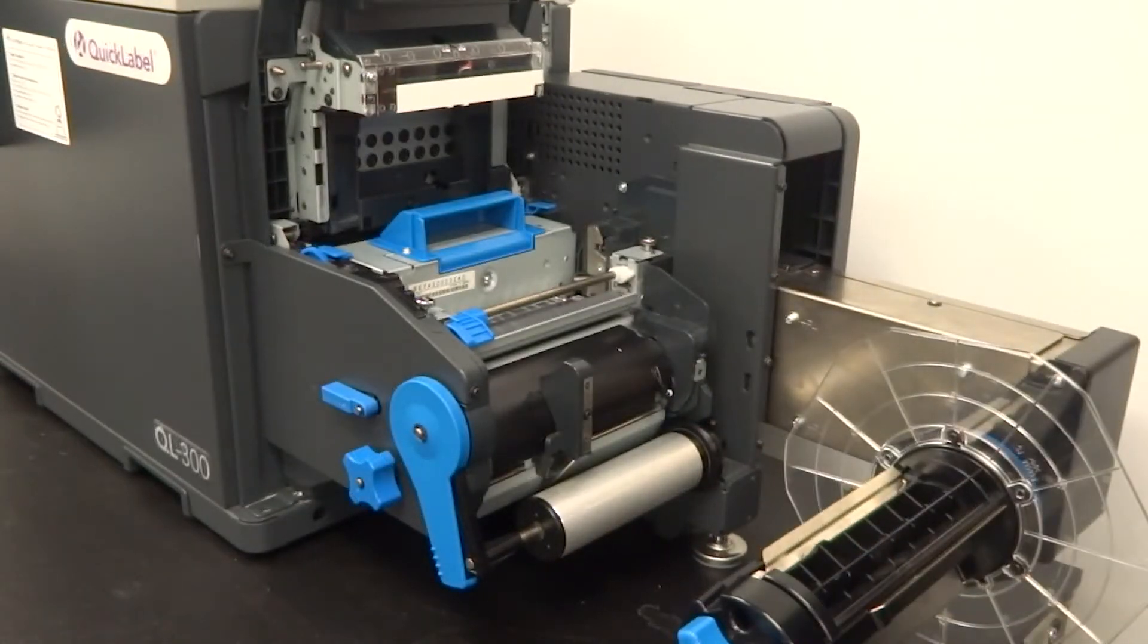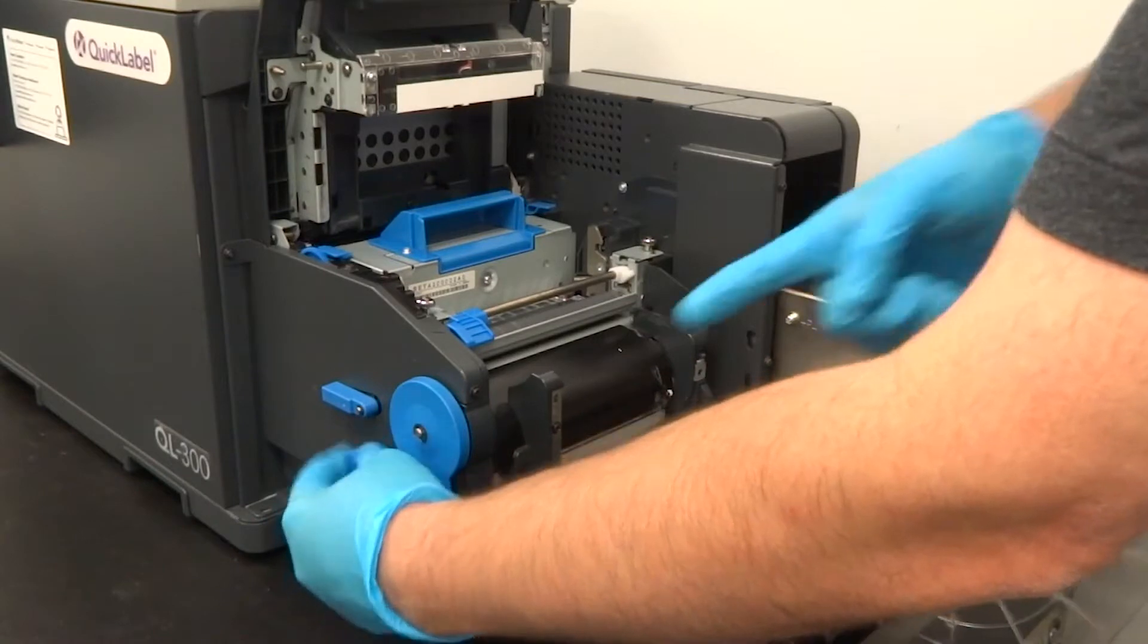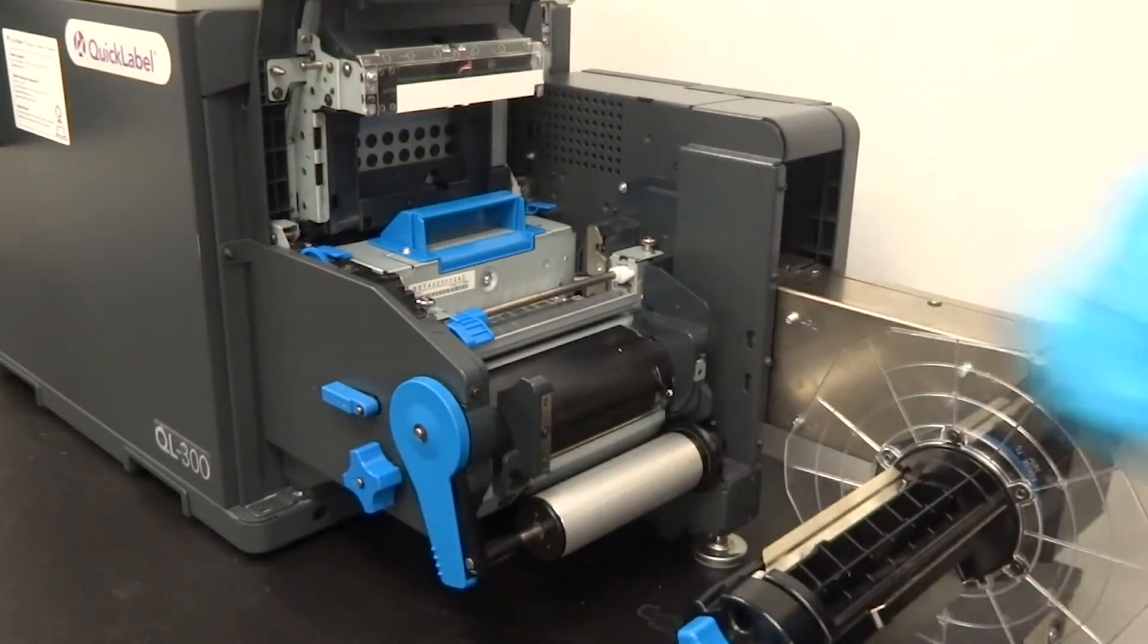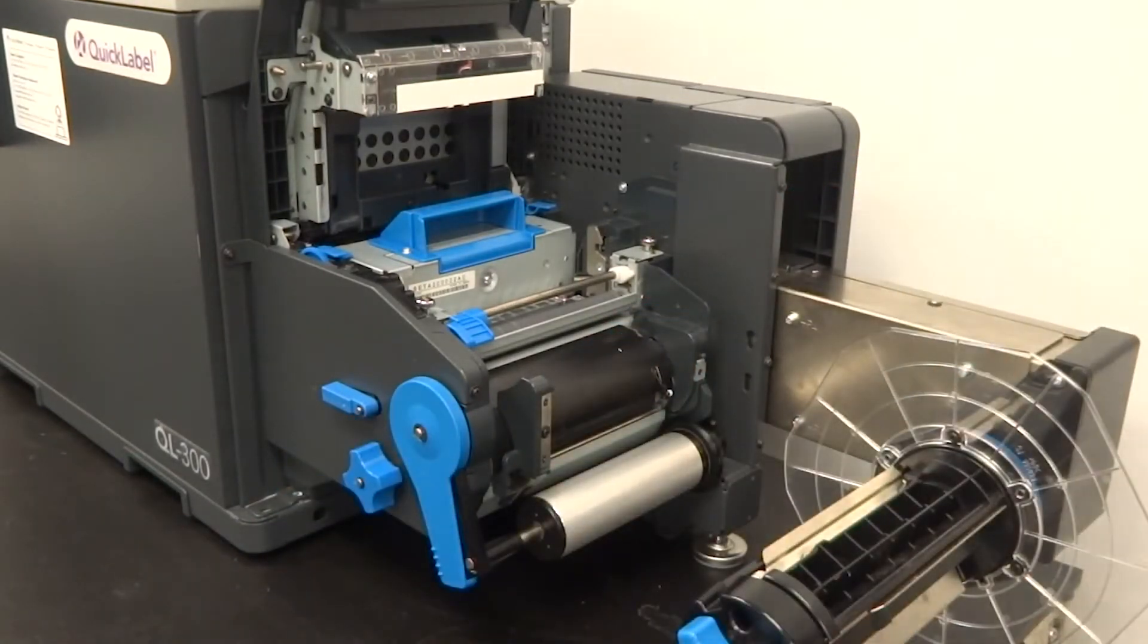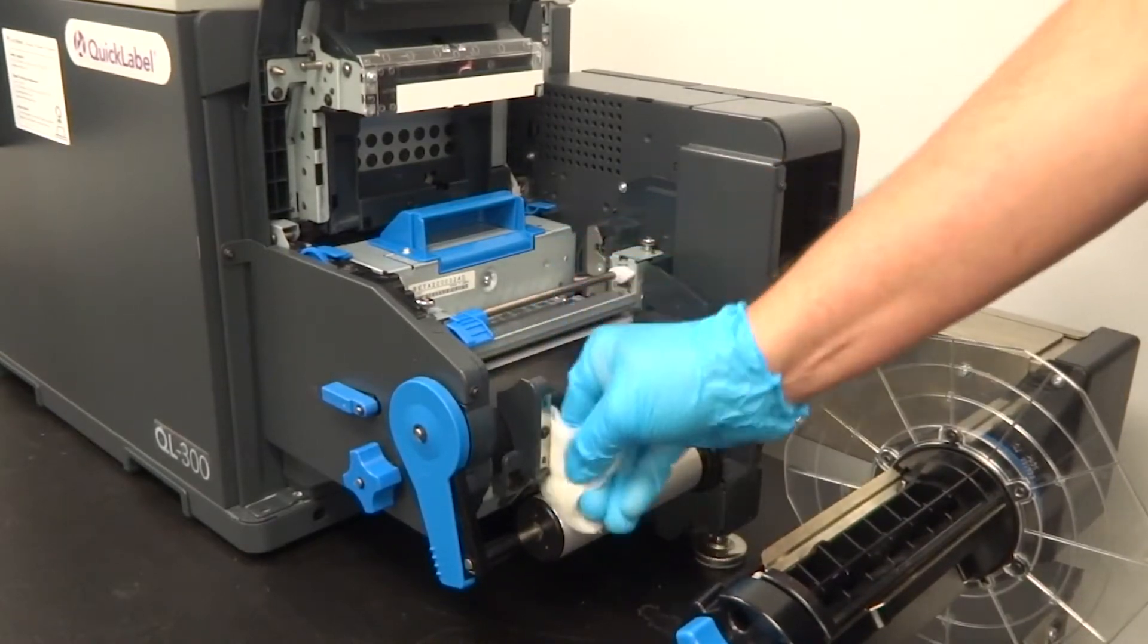Turn the outer label guide adjustment knob clockwise until the guide reaches the outermost position. Wipe the surface of the guide to remove any accumulated adhesive or dust.